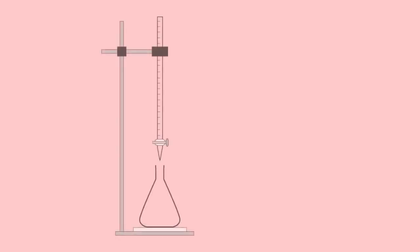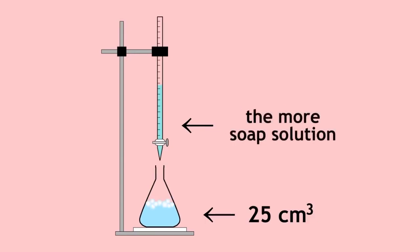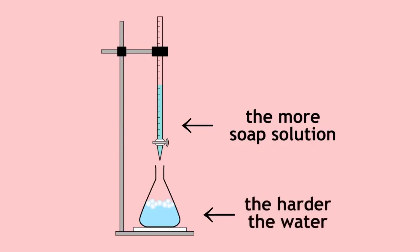To compare the hardness of different water samples, you can take a fixed volume — say 25 cc's of the hard water — and run soap solution in from a burette bit by bit, shaking each time until the soap lathers. That means you'll see bubbles on the surface, and the more soap solution you have to use, the harder will be the water.